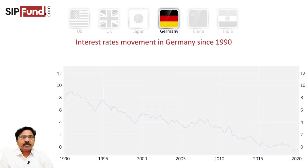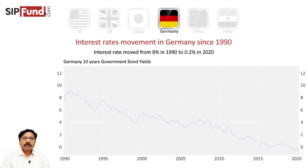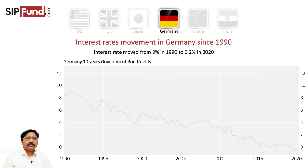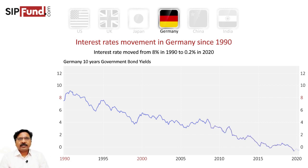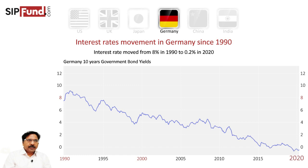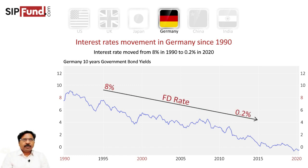You can look at Germany also. Germany had a rate decline from 8% — and mind you, it was the Deutsche Mark until 2000, offering an 8% rate. After 2000 it switched to the Euro currency, and therefore the European Central Bank was controlling the monetary policy and the interest rates. In 2020, the rates have come down to 0.2%, almost going sub-zero.